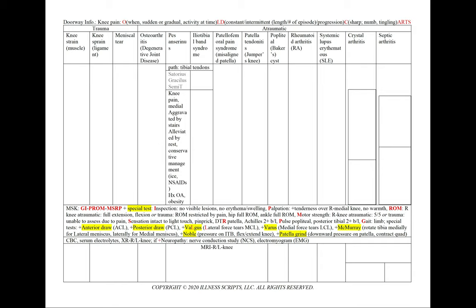In pes anserinum, the pathology involves the tibial tendons. The medial tendons include the sartorius, gracilis, and semitendinosus, and therefore it's going to cause knee pain on the medial side. It will be aggravated by stairs and alleviated by rest and conservative management — ice or NSAIDs. The patient can have a history of osteoarthritis or obesity. We can order an MRI of the right or left knee, which is more to rule out pathologies such as a ligament sprain or meniscal tear.